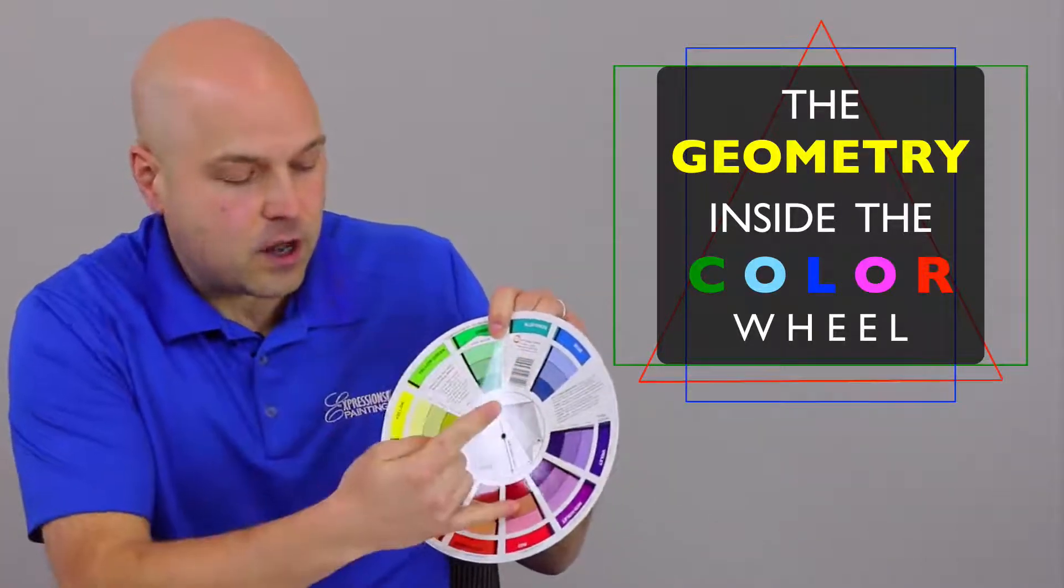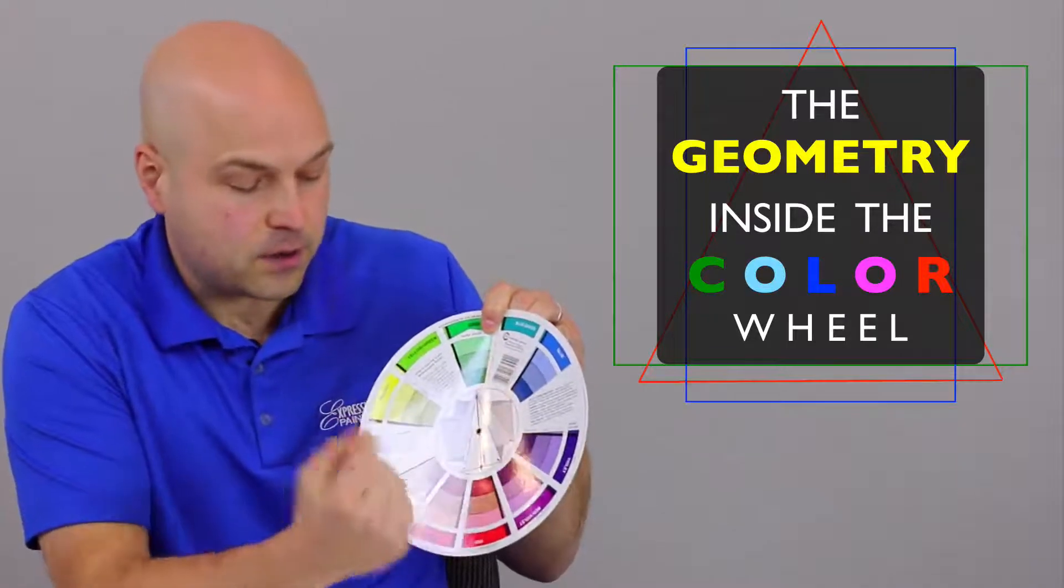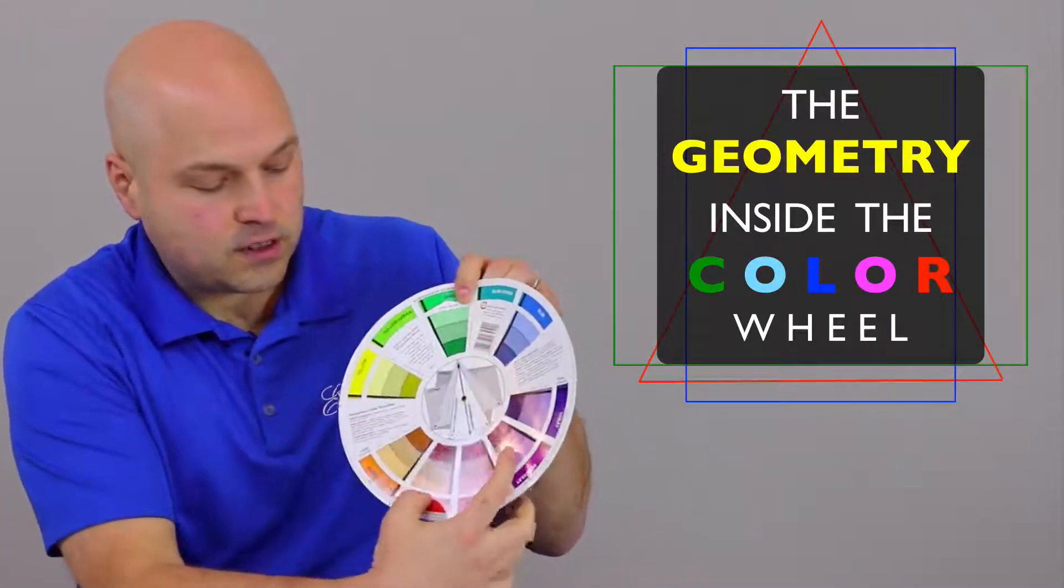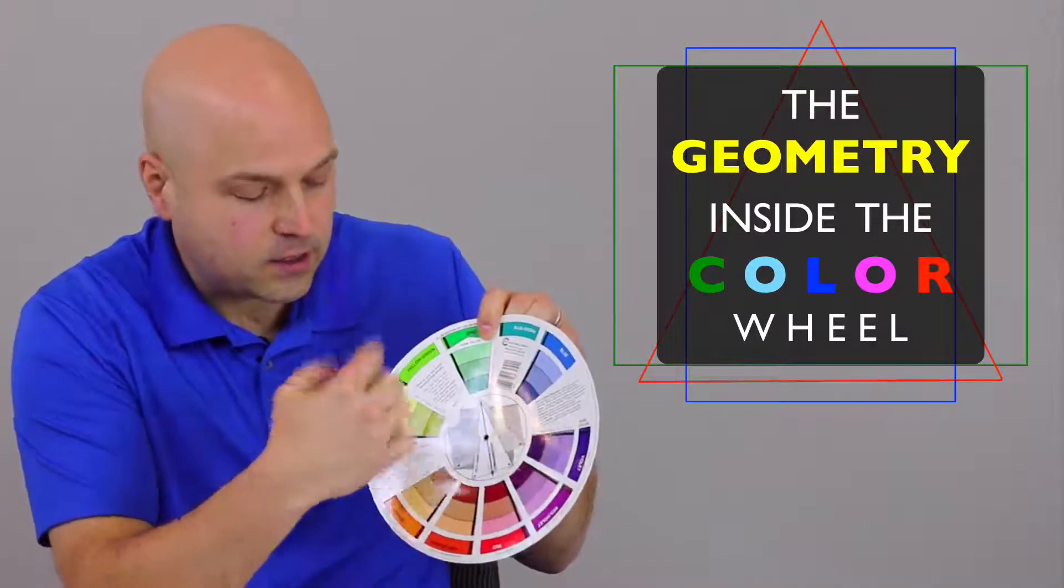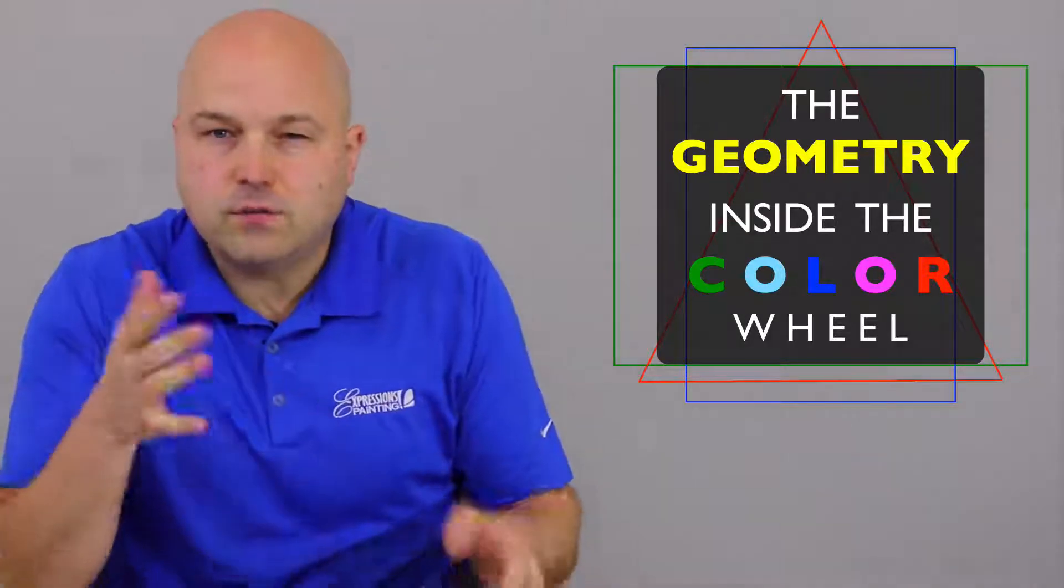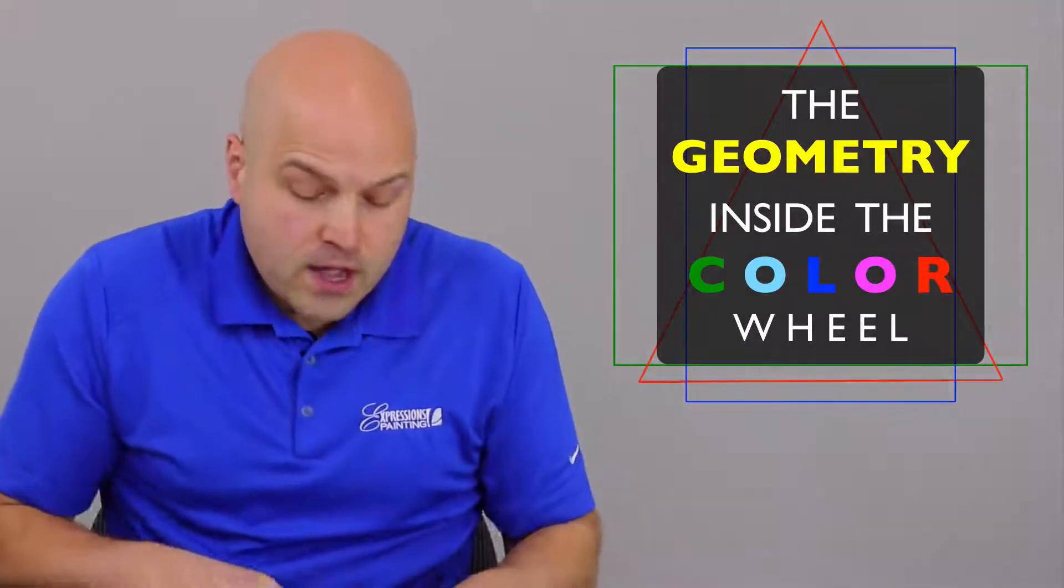You have the complementary colors, which are complete opposite, then you have the split complementary, which are one color and then the ones next to each other, and then there's the triad and the t-triad, which is either rectangle or square or triangle, basically geometric forms.